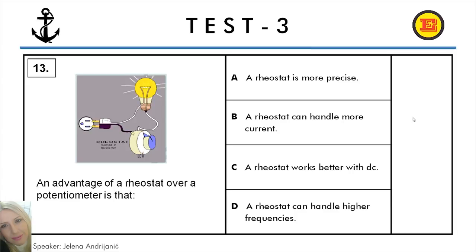Question number 13. An advantage of a rheostat over a potentiometer is that: A: A rheostat is more precise, B: A rheostat can handle more current, C: A rheostat works better with DC, D: A rheostat can handle higher frequencies. And the correct answer is B: A rheostat can handle more current.